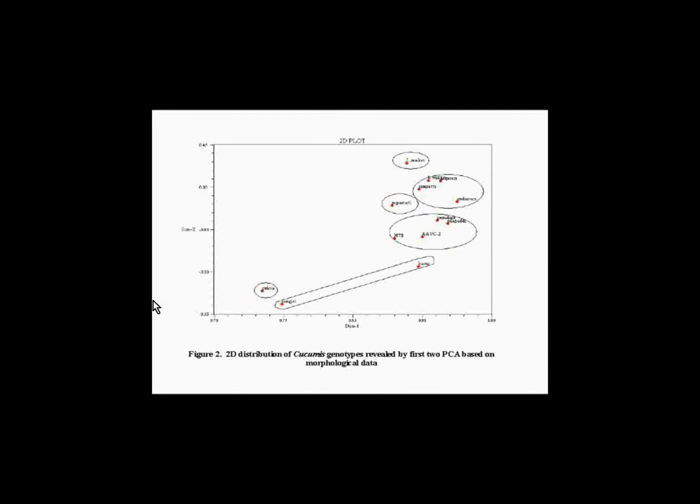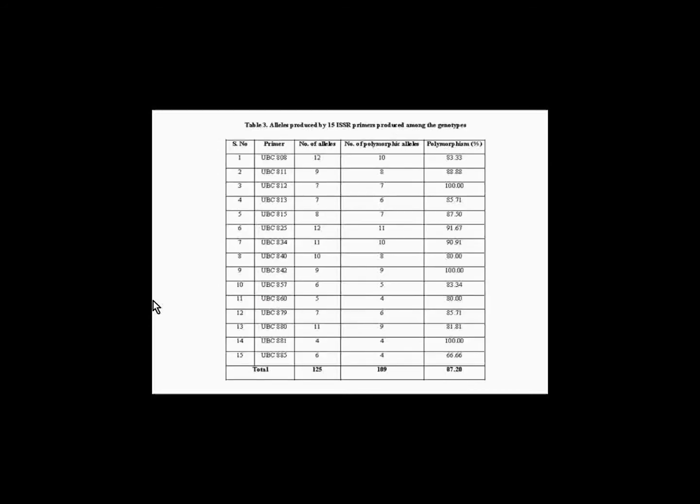The coverage of variation in the genotypes was further analyzed using principal component analysis. The first three principal components in the collection with eigenvalues more than 1 were able to explain 61.1% of the total variation for morphological traits. The variance accumulated by the last components of the base collection is in small amounts. Distribution of Cucumus genotypes revealed by first two PCA analysis based on morphological data shows that among the traits studied, peduncle length, number of fruits per plant, leaf size, fruit breadth, and number of primary branches could be used as characters to distinguish the germplasm entries.